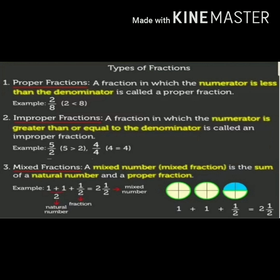First, proper fraction. A fraction in which the numerator is less than the denominator is called a proper fraction. For example, 2 upon 8. Here 2 is the numerator and 8 is the denominator, and since 2 is less than 8, therefore it is a proper fraction.